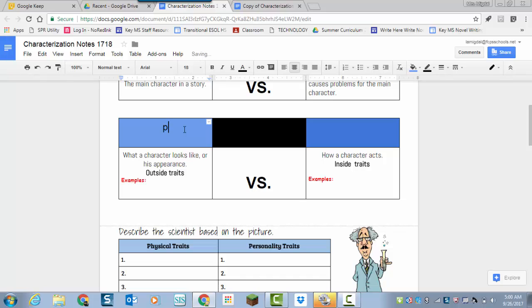The first type is called physical traits. And these are what a character looks like or his appearance. They're outside things you can see, outside traits. So it could be tall or short or brown hair. Things you can see about the character.